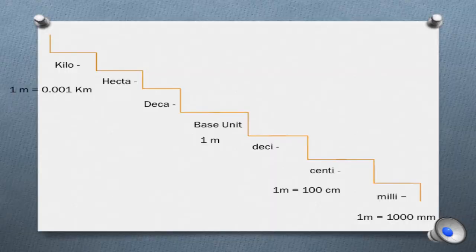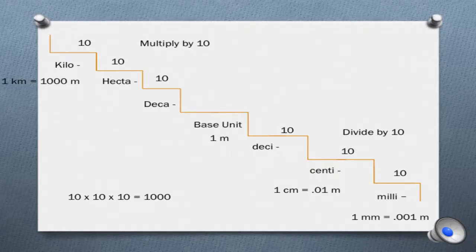Notice that I have like a staircase set over the top of our prefixes. But if you start at one meter, here in the middle, and then go down to deci, it's a step of 10. It's a factor of 10. So there are 10 decimeters in one meter. If we go from deci to centi, it's another factor of 10. And then from centi to milli, it's another factor of 10. If we go up above our base unit, they also change by factors of 10. So each step is a factor of 10.